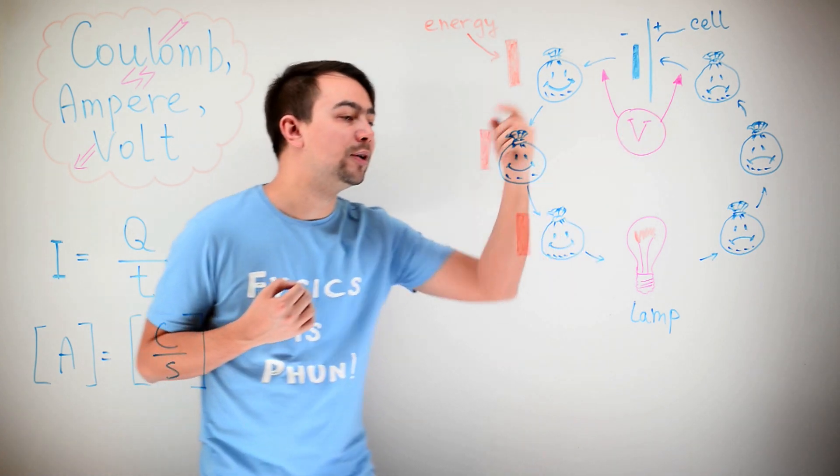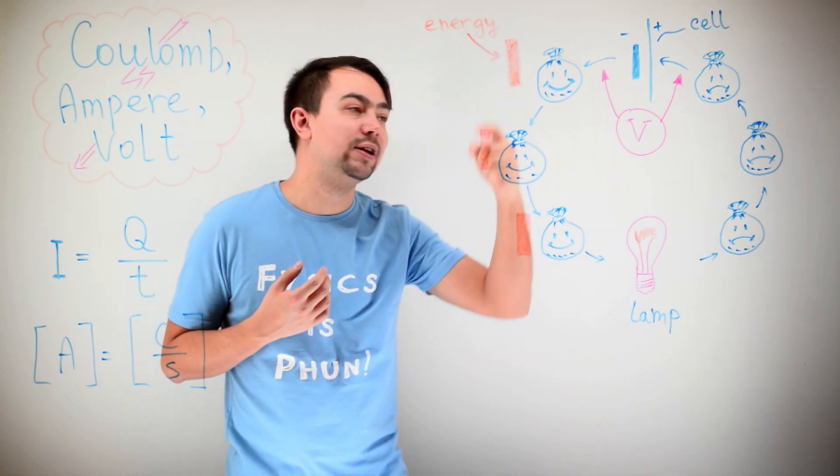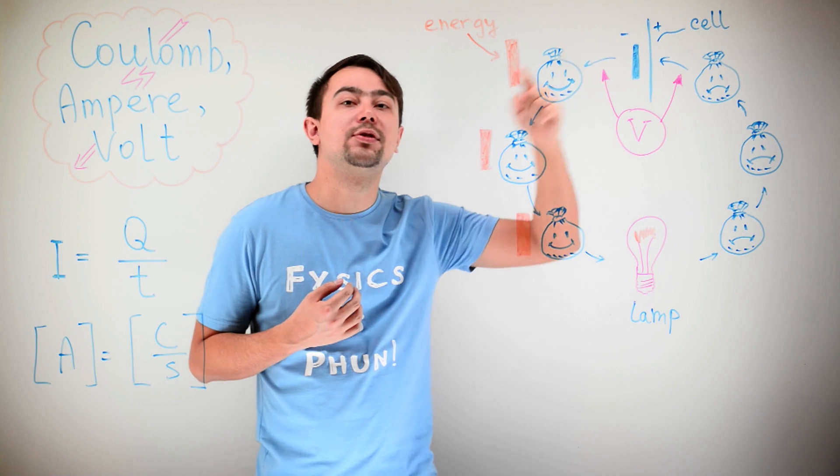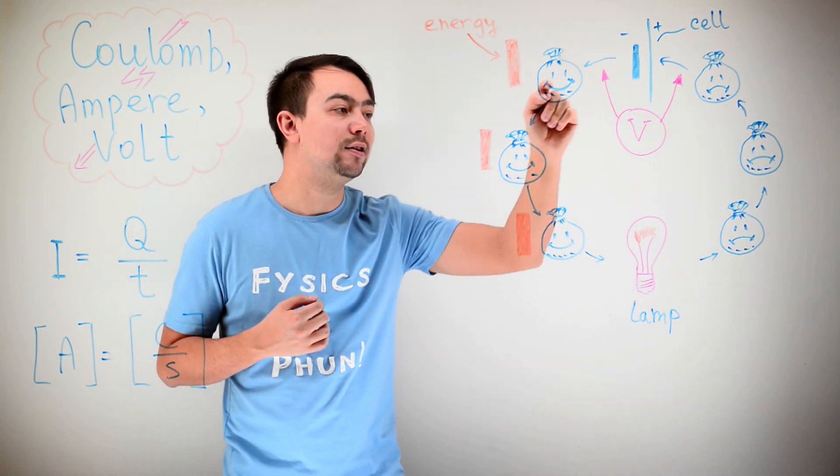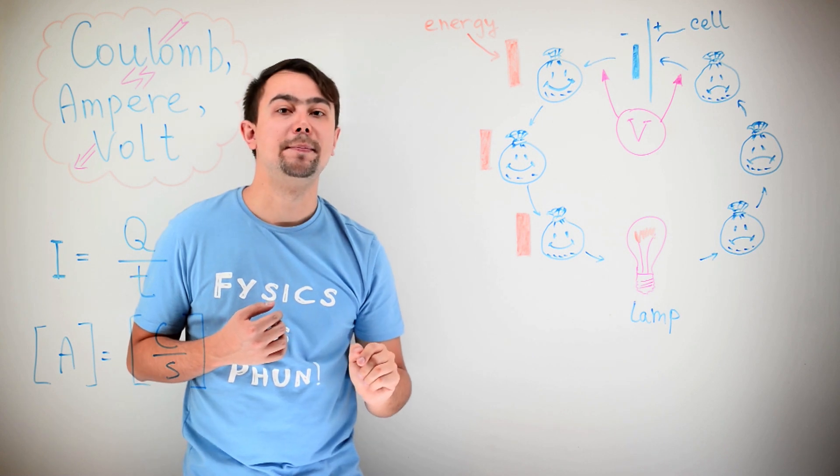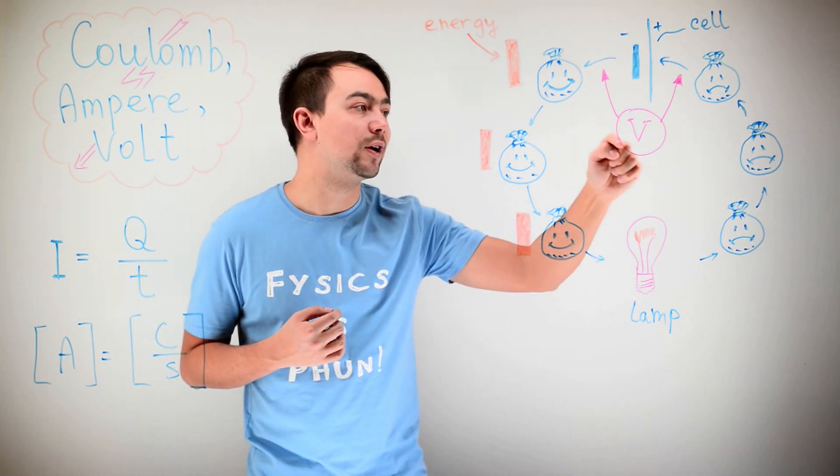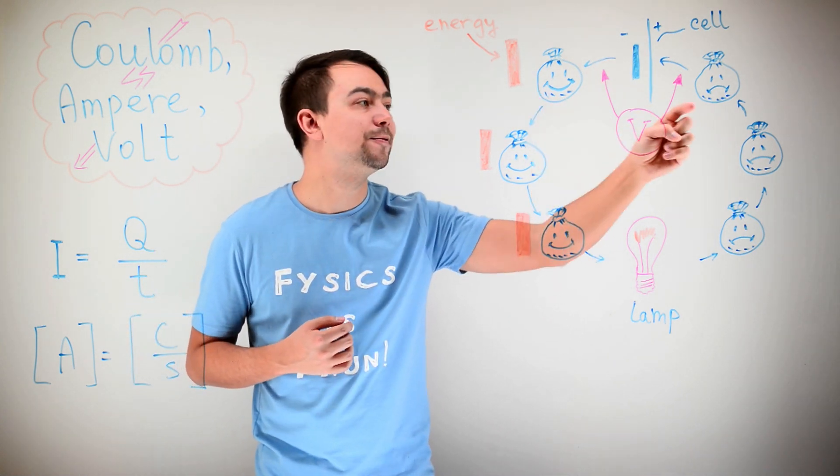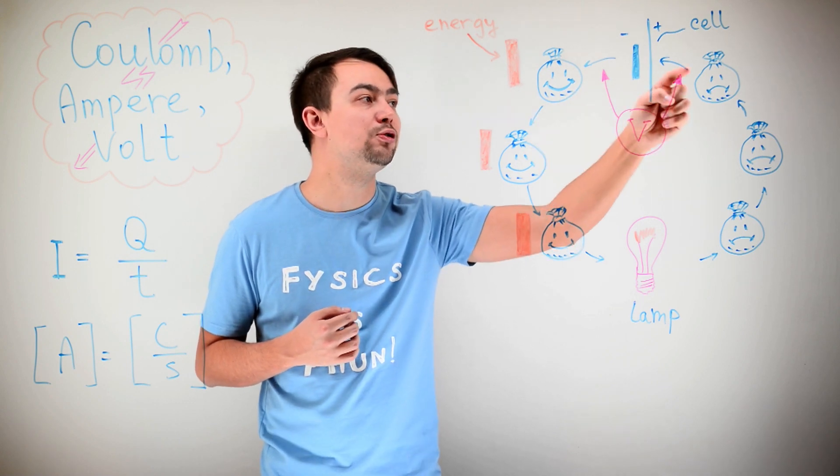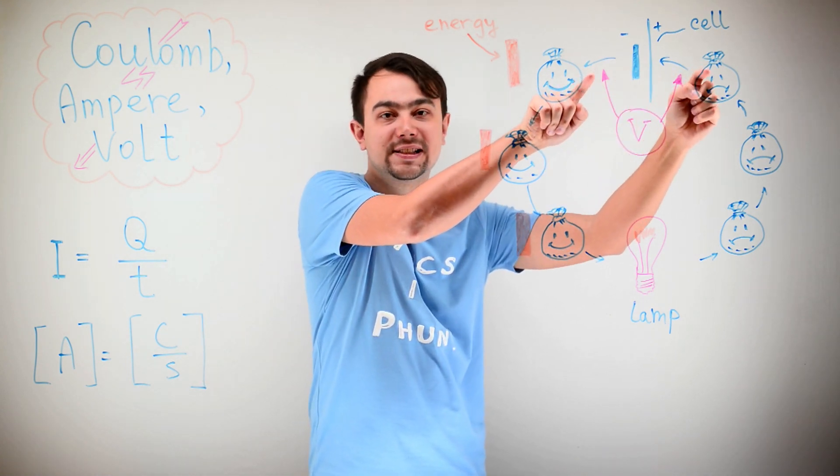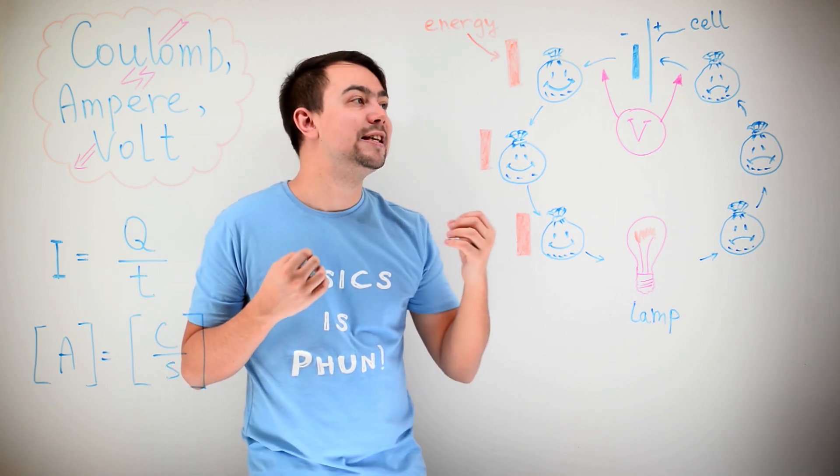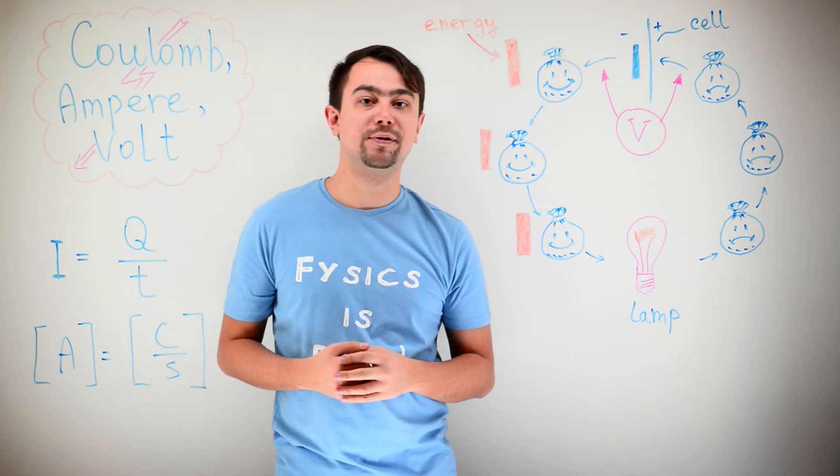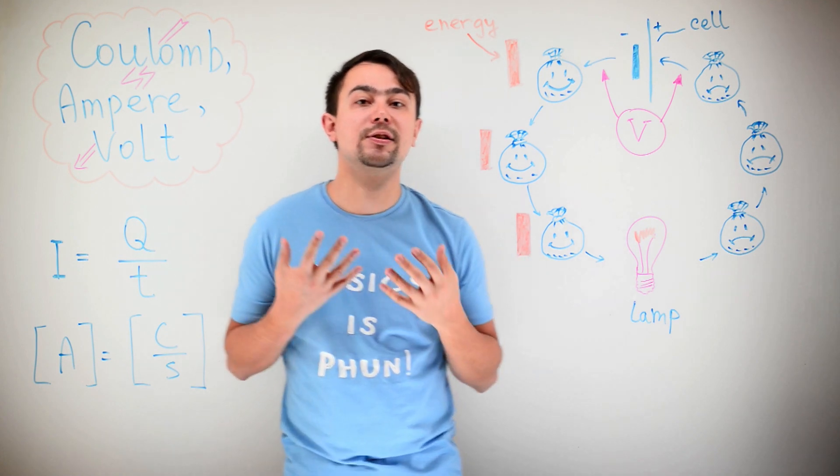Now, as we remember, the bags of electrons go around the circuit, and they fetch some energy in the cell, and then they give the energy to the lamp. If we put a measuring device which measures the difference in energies between these two points, before the cell and after the cell, we get the amount of energy given to each Coulomb of charge. And that's the definition of Volt.